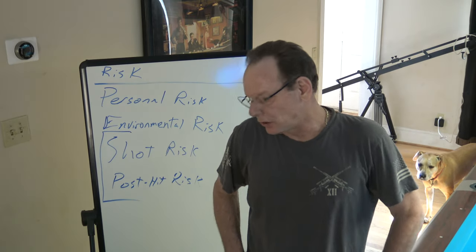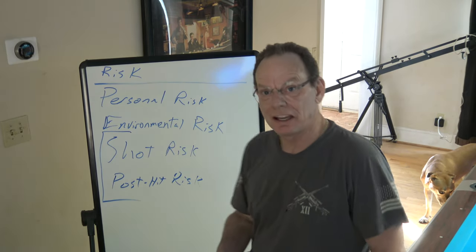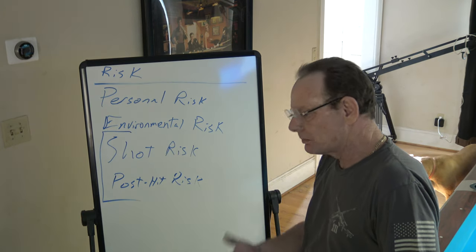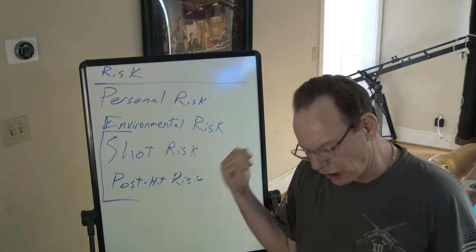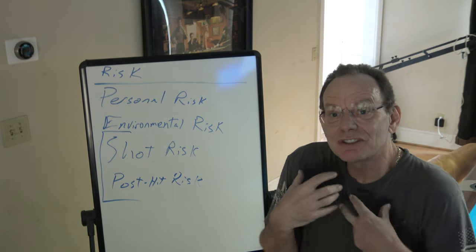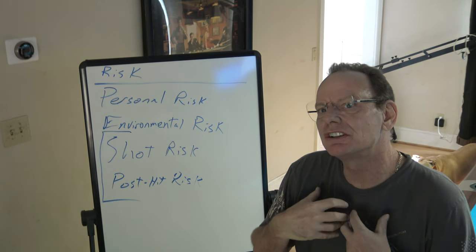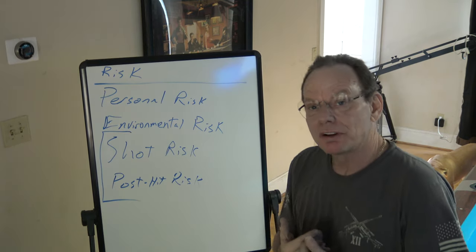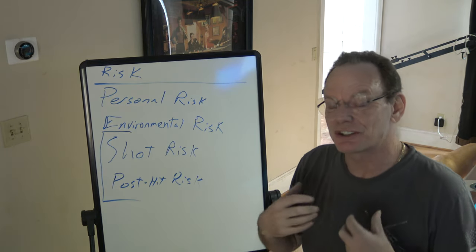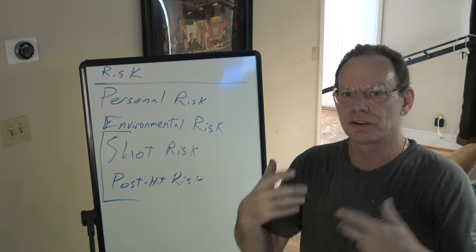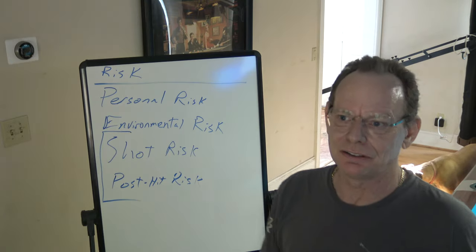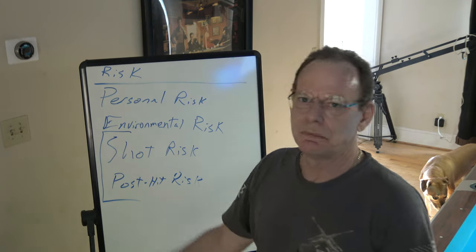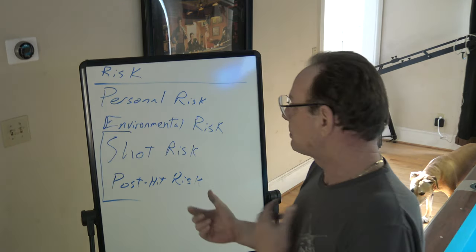Hey y'all, it's Jay. Today we're going to continue risk management. We're going to talk about environmental risk. Last week we talked about personal risk, which are things intrinsic to you that cause risk in your game. Environmental risk is things that are not you but are part of the surrounding environment — things like the weather, the crowd, the venue, and the equipment.